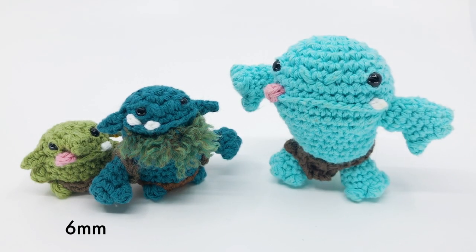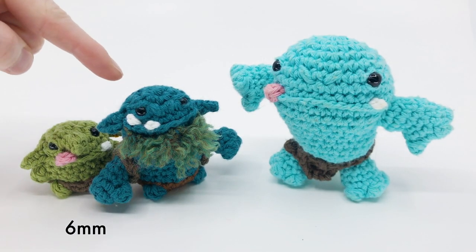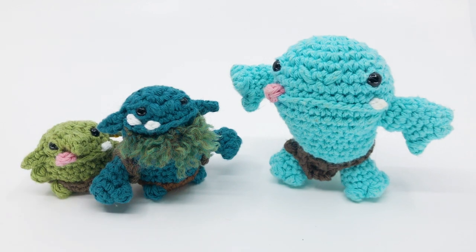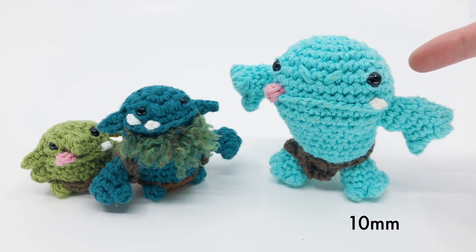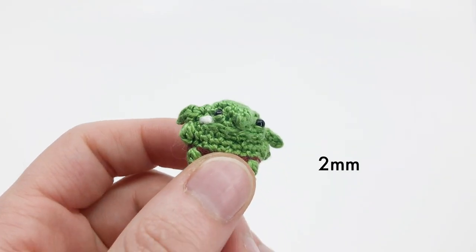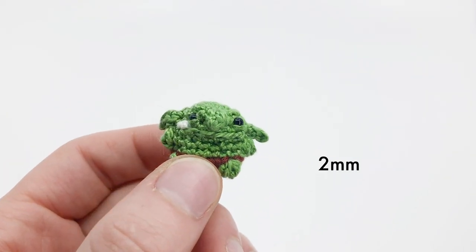I usually use 6mm eyes for my smaller characters, for example orcs and goblins, and larger 10mm eyes for my bigger characters like this ogre. I've also been known to use micro eyes like these 2mm eyes for super minis.